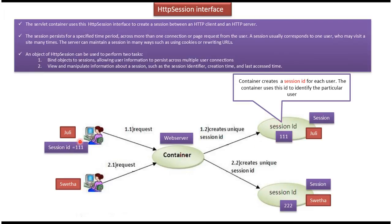If Julie makes further requests — a second request and a third request — this session ID will be part of the request. So the container can identify the particular user using the session ID. If Julie sends a request to the container for the second or third time, using session ID 111, the container can identify the request is coming from Julie.